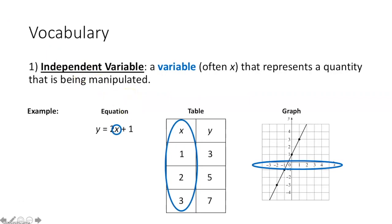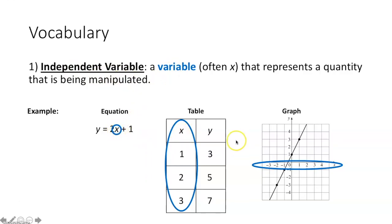The first vocabulary term is an independent variable. It's a variable, often x, that represents a quantity that is being manipulated. In this section, we're going to talk about independent and dependent variables. An independent variable is something we are going to manipulate — it's likely going to be either x or t for time.